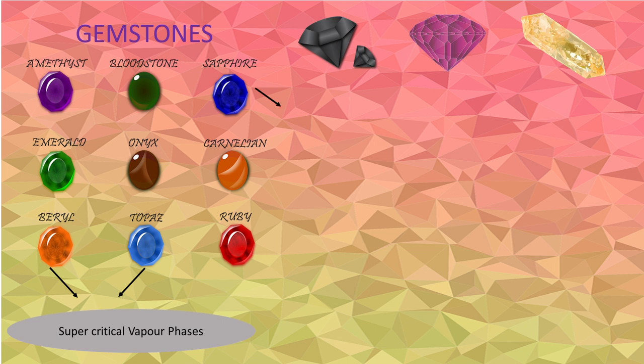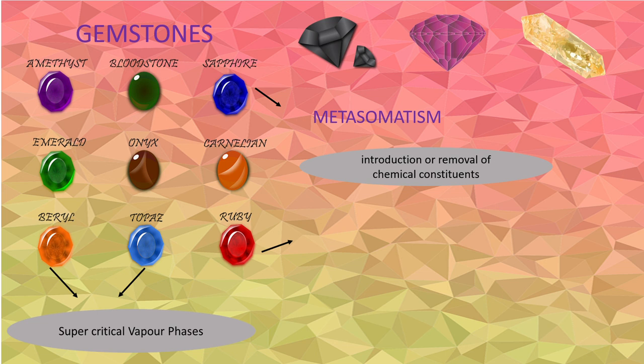Ruby and sapphire are gemstones which are formed through metasomatism and metamorphism.